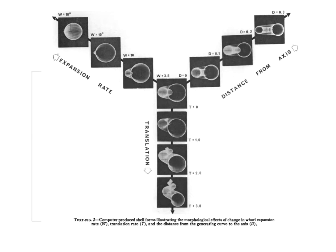So the different variables are in the top right, distance from axis. So you can think of this as sort of like a loose coil or a tight coil. On the left corner is expansion rate, which is how much the diameter of the shell changes as it curls.